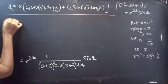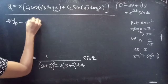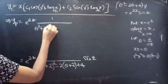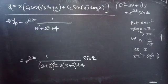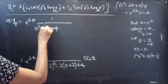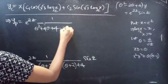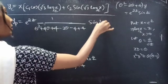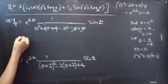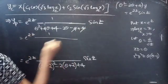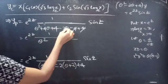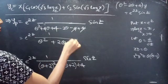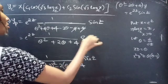After shifting, yp becomes e to the 2z times 1 over [(theta plus 2) squared minus 2(theta plus 2) plus 4] times sine z. Expanding (theta plus 2) squared gives theta squared plus 4 theta plus 4. Then the denominator becomes theta squared plus 4 theta plus 4 minus 2 theta minus 4 plus 4, which simplifies to theta squared plus 2 theta plus 4, since the plus 4 and minus 4 cancel.